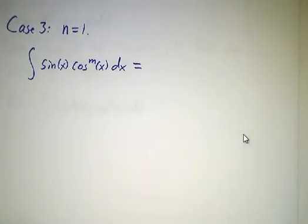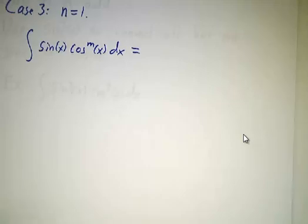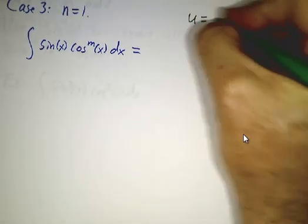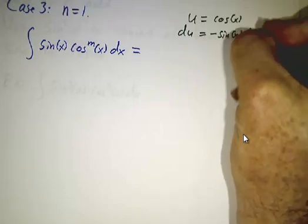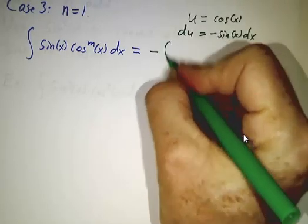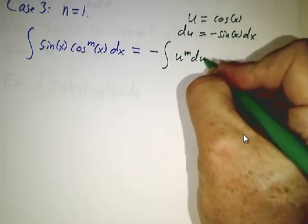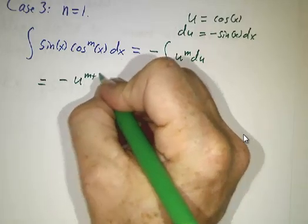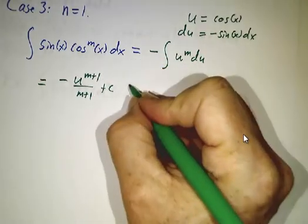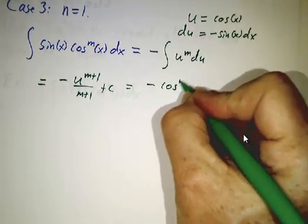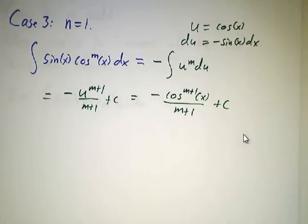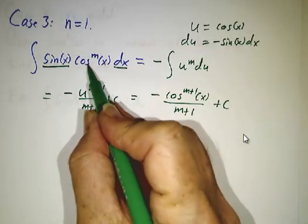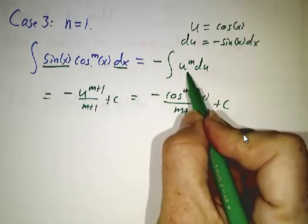The next case is where you have only 1 power of sin. In that case, you want to do the u-substitution where u is cos of x, so du is minus sin of x dx. This becomes minus the integral of u to the m du, which gives minus u to the m plus 1 over m plus 1, plus a constant. So you wind up with minus cos to the m plus 1 of x over m plus 1, plus a constant. This is essentially minus du times u to the m — an easy integral.